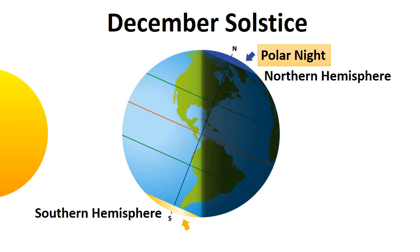In the Southern Hemisphere, all things are opposite. Areas within the Antarctic Circle experience polar days when the Northern Hemisphere has polar nights.